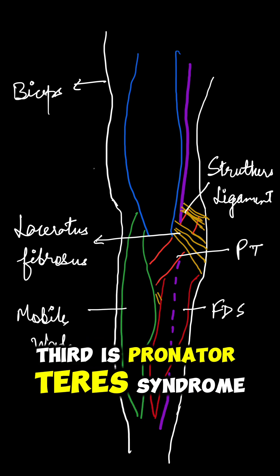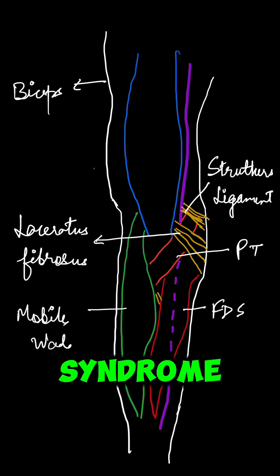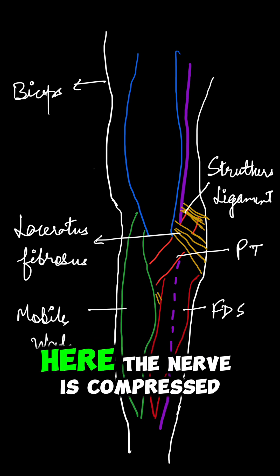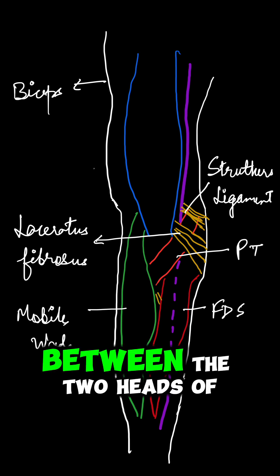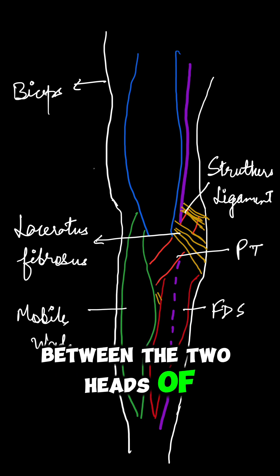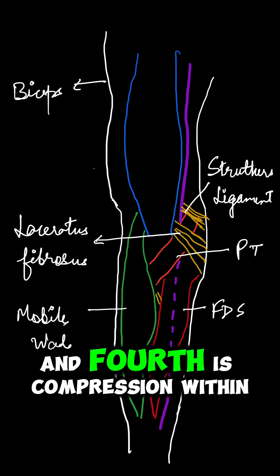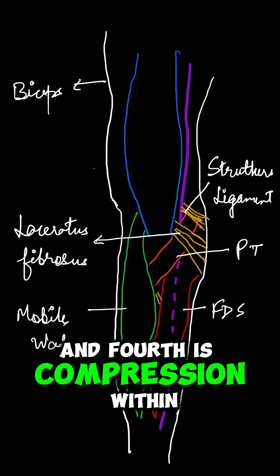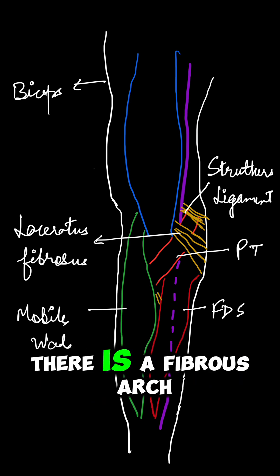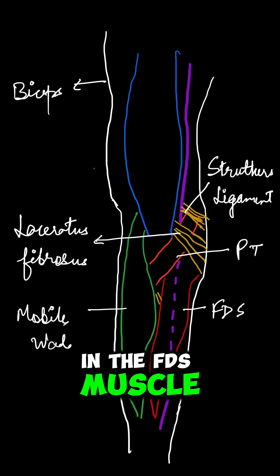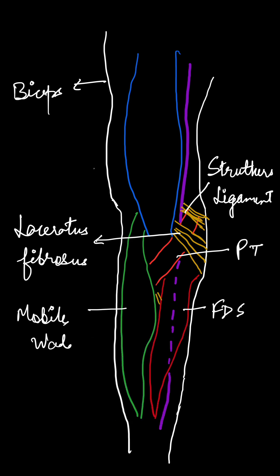Third is pronator teres syndrome. This is the most common syndrome. Here the nerve is compressed between the two heads of the pronator teres muscle. Fourth is compression within the FDS muscle — there is a fibrous arch in the FDS muscle which can compress the median nerve.